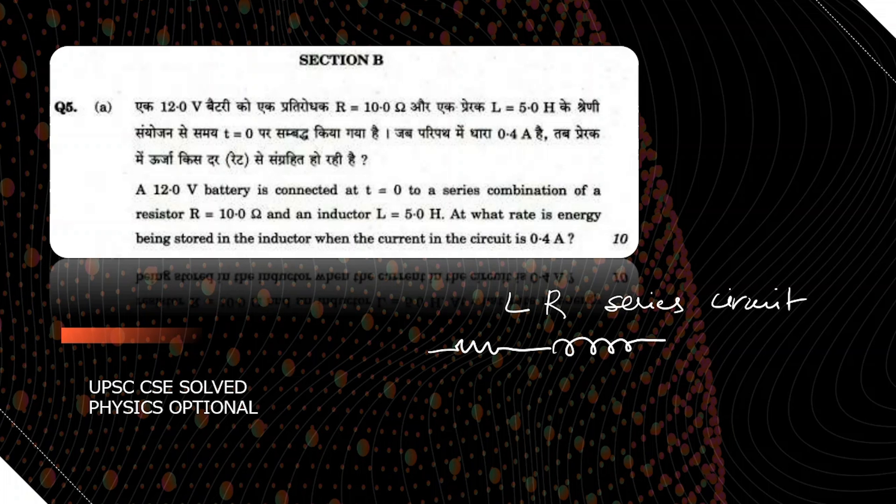We are given the resistor of 10 ohm and the inductor of 5 Henry, so we will have to find out at what rate is the energy being stored in the inductor when the current is 0.4 ampere.